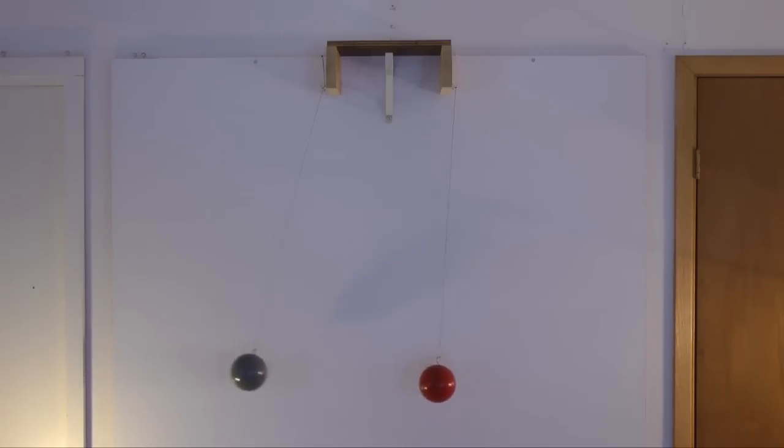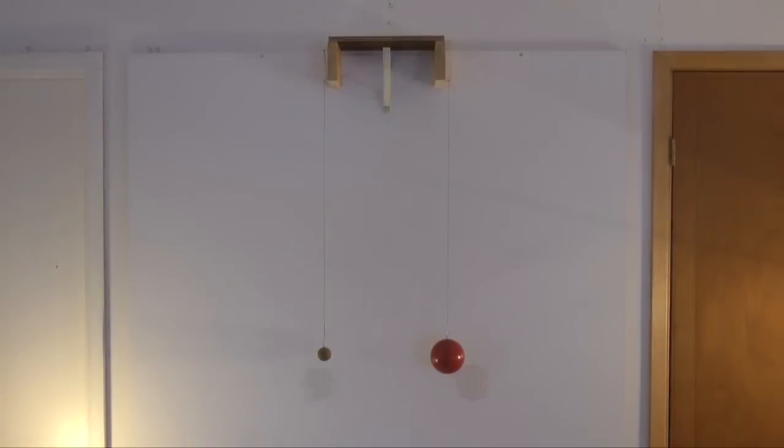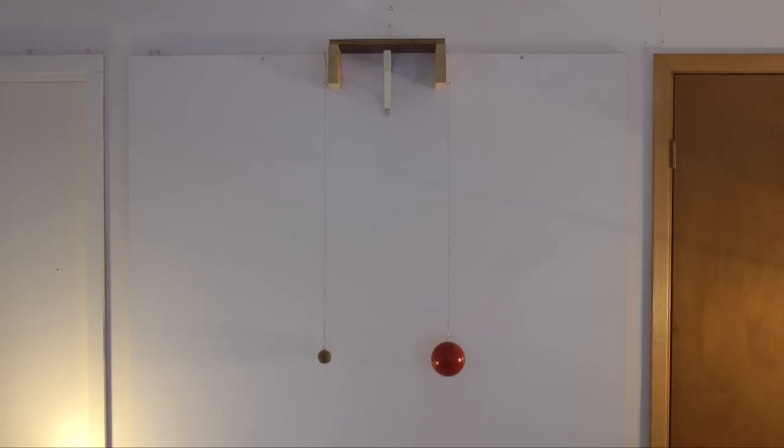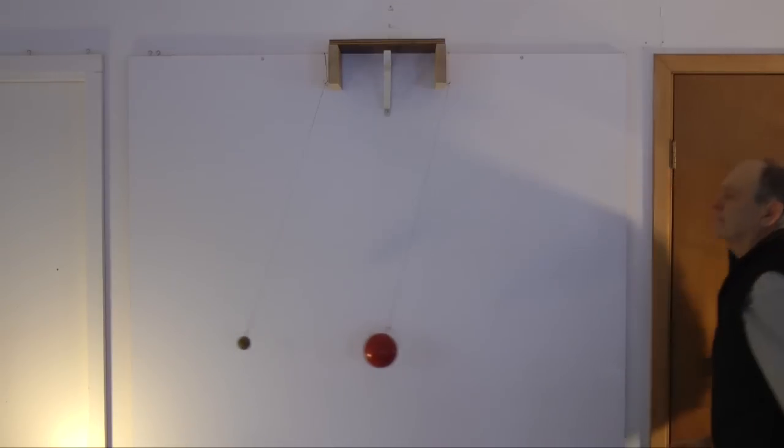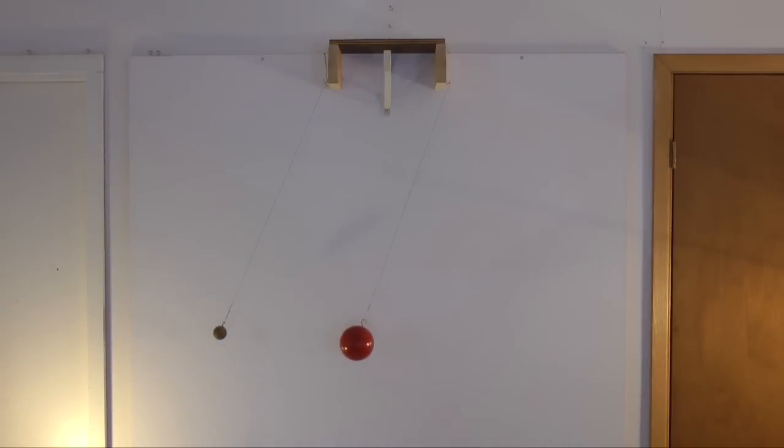He also discovered that the weight of the pendulum's bob does not affect the period of the swing. In this example, the larger pendulum bob is much heavier than the small one, but the pendulums have the same length, as measured to the center of the bob. They swing with the same period.